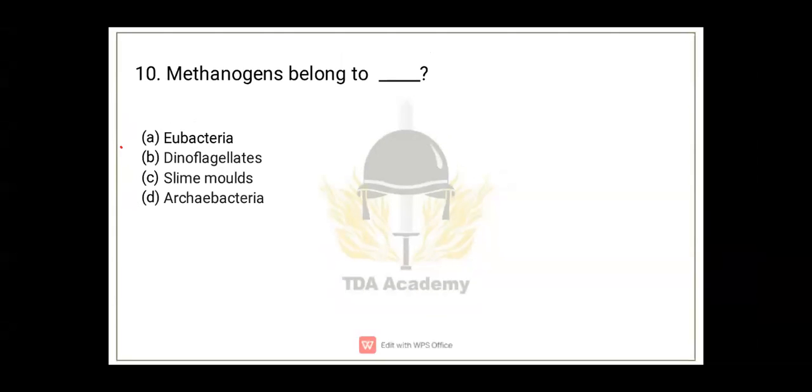Let's move on. Question number 10, the last question in this series: methanogens belong to? Options are eubacteria, dinoflagellates, slime molds, and archaebacteria. We've already covered this. The correct answer is archaebacteria. Eubacteria and archaebacteria are subclassifications of Monera. Archaebacteria are special types that survive in extreme climates. One example is methanogens found in the gut of cattle. The correct answer for question 10 is option D.